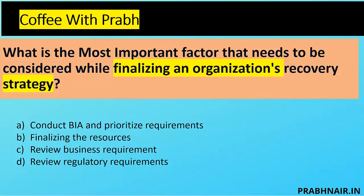First coffee shot: what is the most important factor that needs to be considered while finalizing the organization recovery strategy? Option A is conduct the BIA and prioritize the requirement — definitely BIA is one of the most important components we have for the BCP.